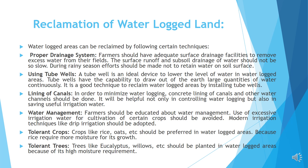Water management: Farmers should be educated about water management. Use of excessive irrigation water for cultivation of certain crops should be avoided. Tolerant crops: Crops like rice, oats, etc. should be preferred in waterlogged areas because rice requires more moisture for its growth. Tolerant trees: Trees like eucalyptus, willows, etc. should be planted in waterlogged areas because of their high moisture requirement.